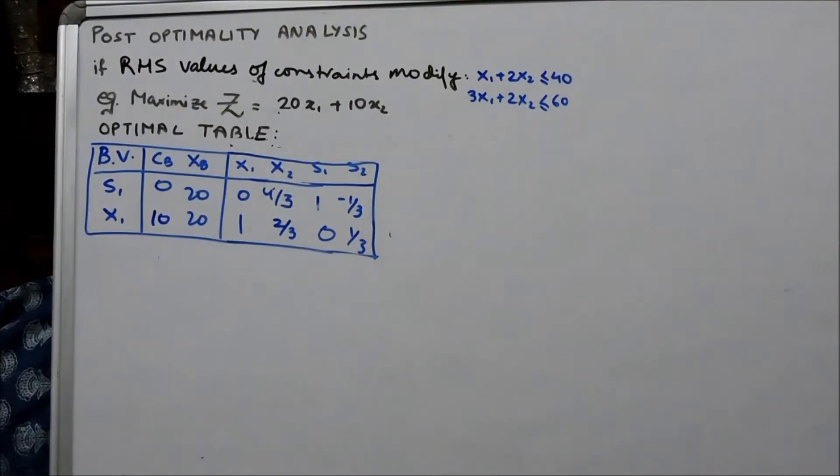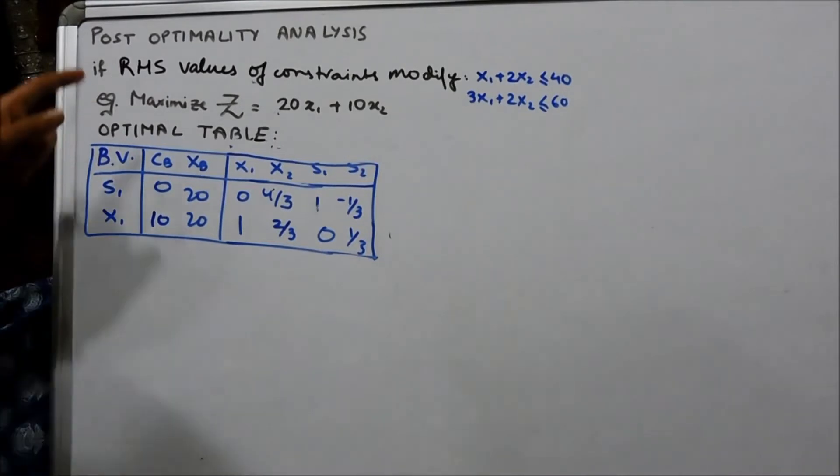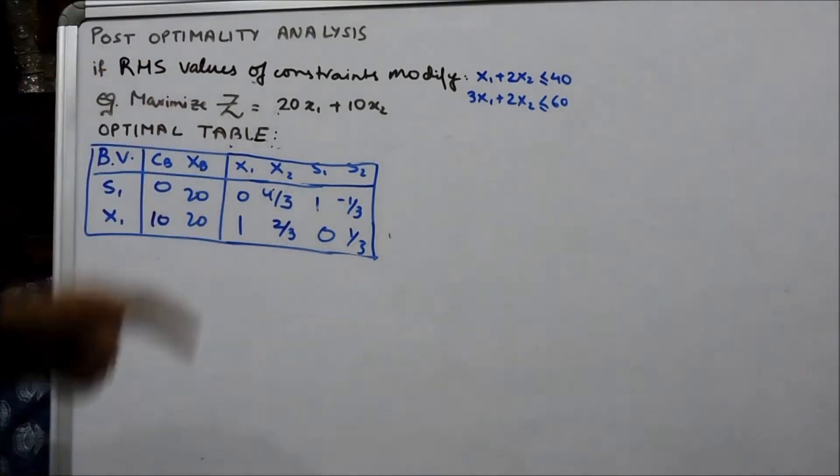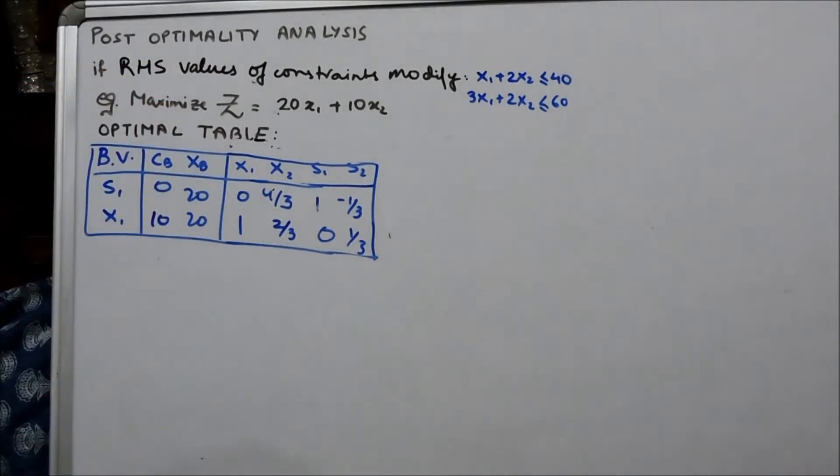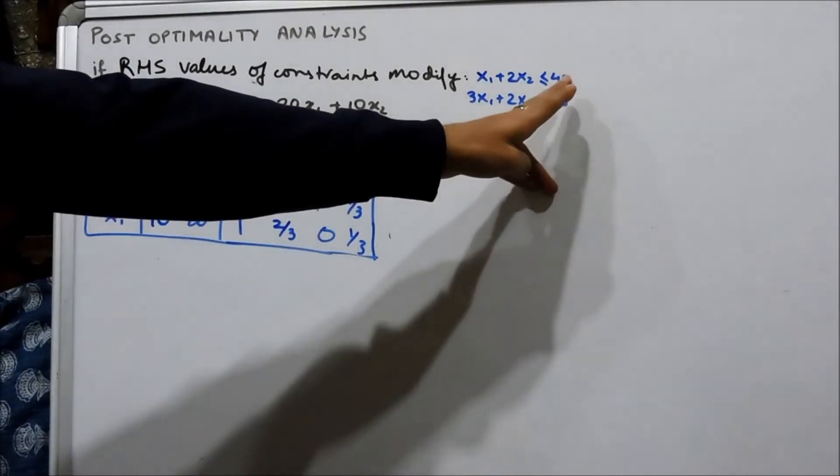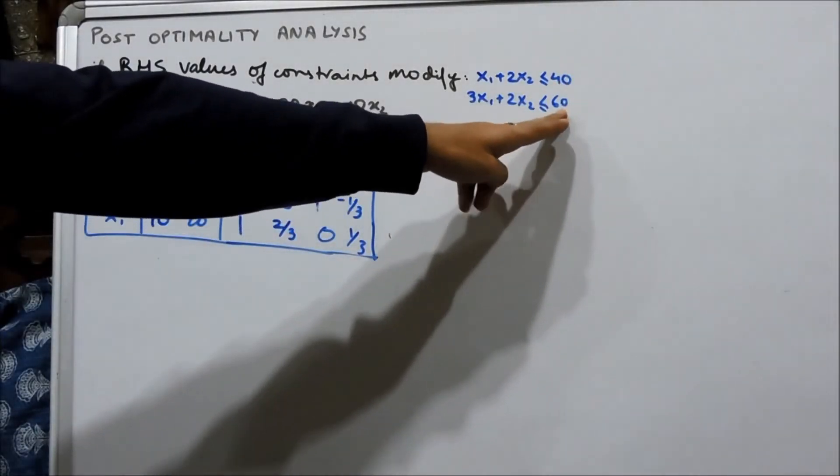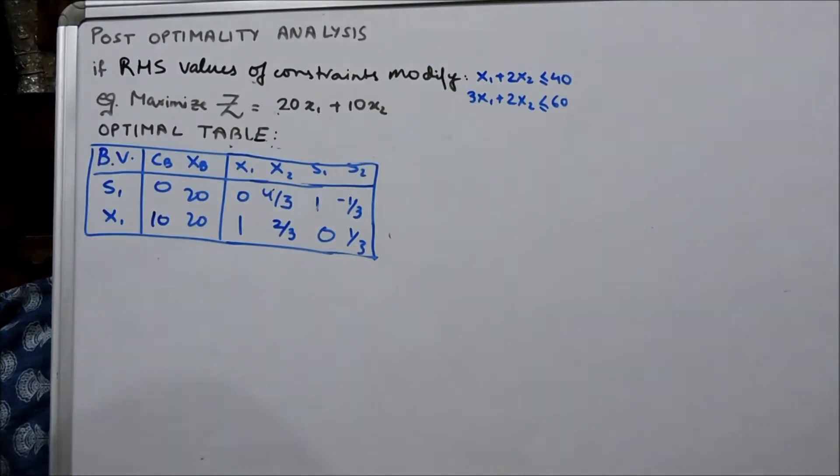Continuing from the previous example, now we are going to take a look at what happens when the RHS values of the constraints modify. That is, what happens if this 40 or 60 which is on the right hand side of the constraints change.